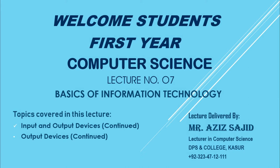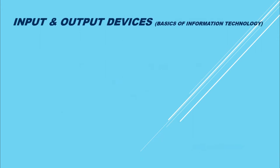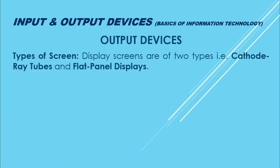Input devices were completed in the last chapter. Now we have started output devices and we will continue further. Output devices ka ek aur sub-topic hoga — printers ki ek type hai impact printer. Output devices ka topic start ho chuka hai. Isme hum screens ki discussion kar rahe the last lecture mein. Screens mein jo differences hote hain unki types par baat ki gayi thi — sizes ki wajah se, color ki wajah se, resolution ki wajah se, aur VGA (Video Graphics Array) ke differences. Wahi topic abhi continued hai: types of screen.